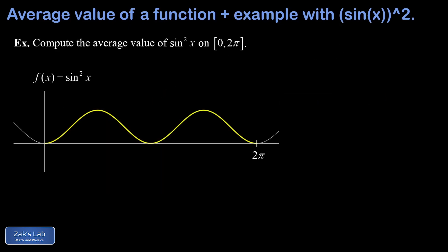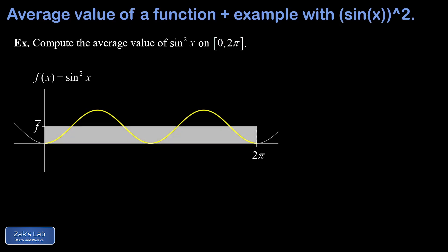Now in our example we apply this definition to the function sine squared x on the interval 0 to 2π. So there's our function f-bar bounding the same area as the sine squared function on this interval, and with the maximum value of sine squared being 1, it sure looks like f-bar should be one half, but we're going to prove that it's one half.